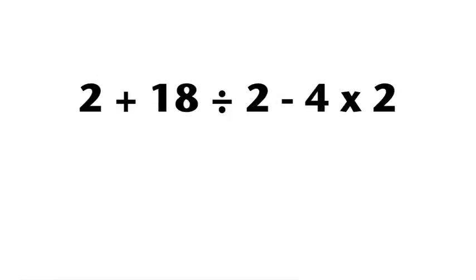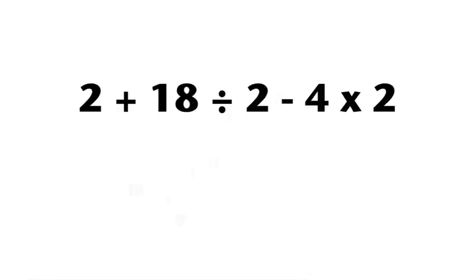Now back to Trent. Thanks, MVP. What operation should you do first in an expression like two plus eighteen divided by two minus four times two? Here is one basic rule. Multiplication and division should be done before addition and subtraction. Some teachers have their students add parentheses to avoid confusion. If you enclosed eighteen divided by two and four times two with parentheses, then you know for sure what to do first.